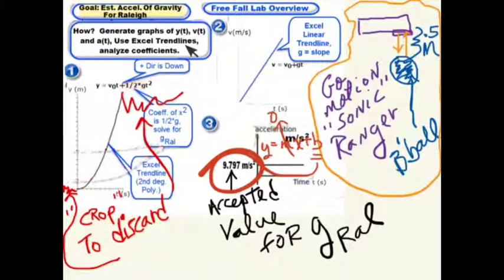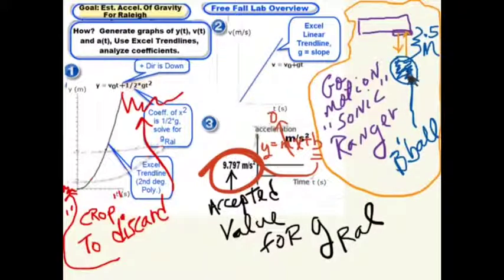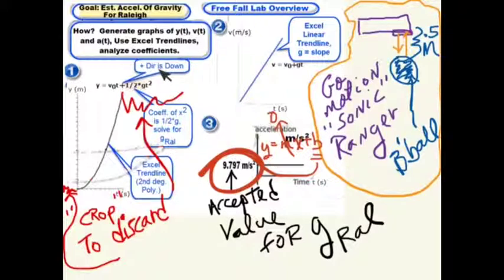We will use a Sonic Ranger, known as a GoMotion device, to generate graphs of position versus time — the position being the distance from the Sonic Ranger of a basketball — the velocity-time graph, and the acceleration-time graph. The GoMotion device will generate the data, which will be dumped into Excel to generate three trend lines to measure the acceleration of gravity for Raleigh.